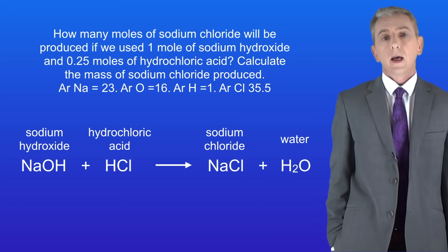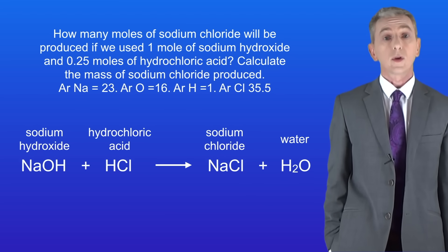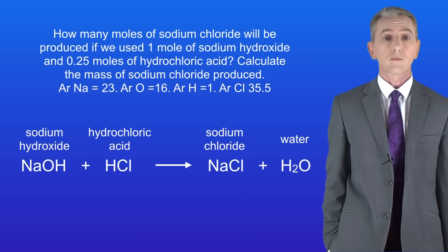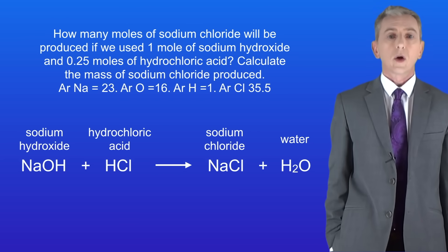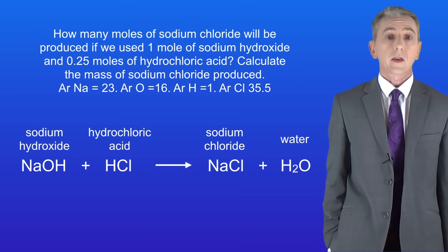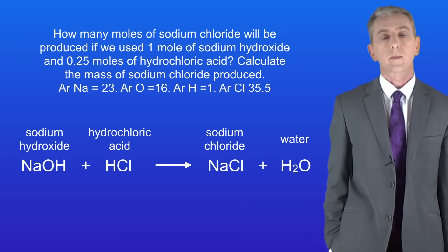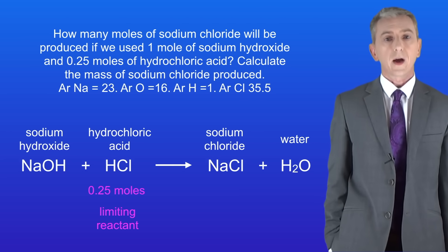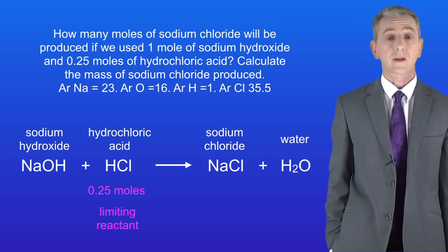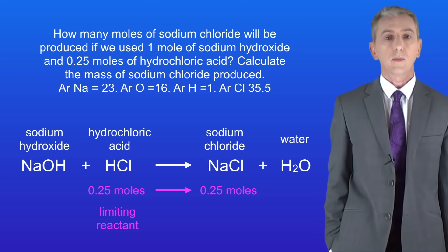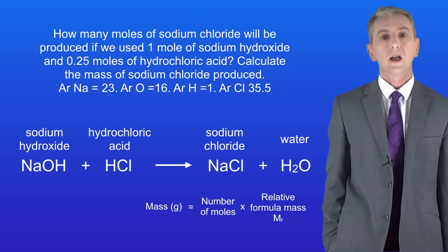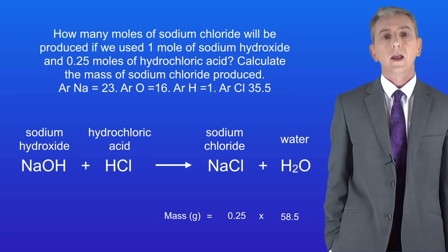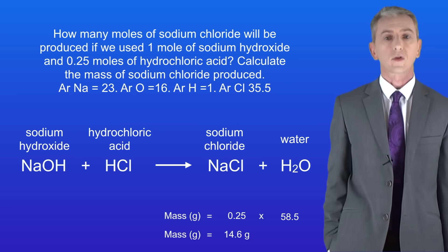Here's a question for you to try. How many moles of sodium chloride will be produced if we used 1 mole of sodium hydroxide and 0.25 moles of hydrochloric acid? Calculate the mass of sodium chloride produced. Pause the video now and try this yourself. Looking at the equation we can see that one mole of sodium hydroxide reacts with one mole of hydrochloric acid to make one mole of sodium chloride. Because we're only using 0.25 moles of hydrochloric acid, this makes the hydrochloric acid the limiting reactant. This means that we can make 0.25 moles of sodium chloride. To work out the mass we multiply the number of moles by the relative formula mass: 0.25 multiplied by 58.5 gives us a final mass of 14.6 grams to one decimal place.